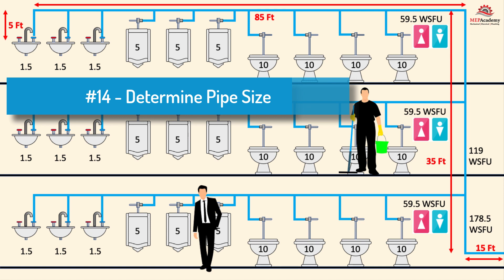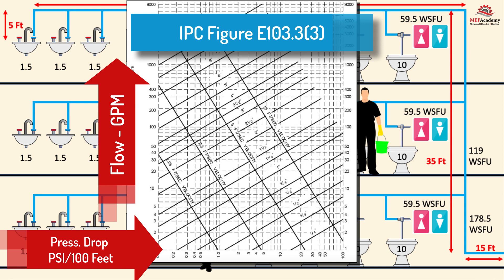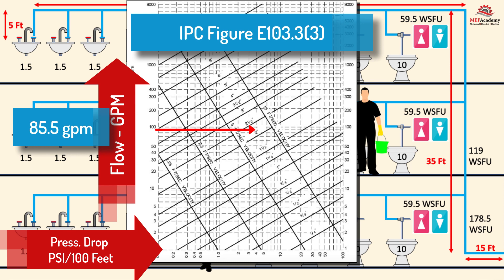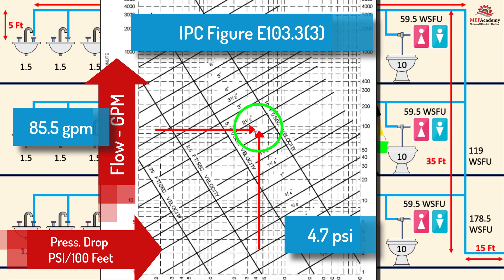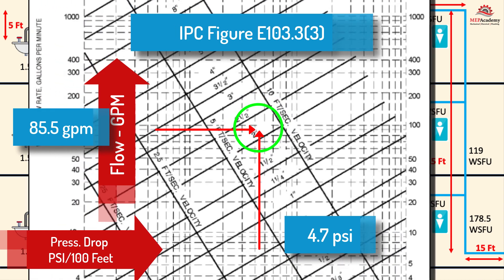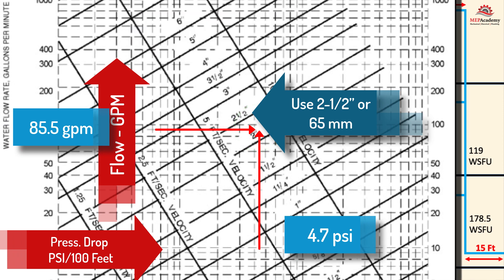Step 14: Determine Size of Water Service Pipe. Using IPC Figure E103.3.3, we enter the total flow of 85.5 GPM and the allowable pressure drop of 4.7 PSI per 100 feet; they intersect just above the 2-inch pipe line. To be safe, we'll specify a 2.5-inch or 65-millimeter pipe. If analysis revealed insufficient city pressure to overcome all losses and provide the minimum required pressure at the most remote fixture, a booster pump would be considered.